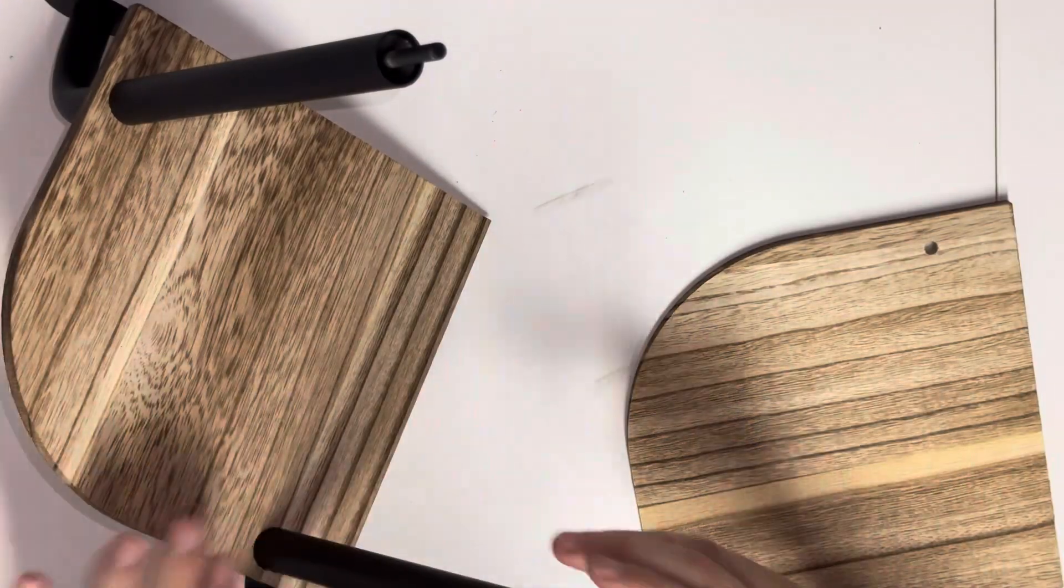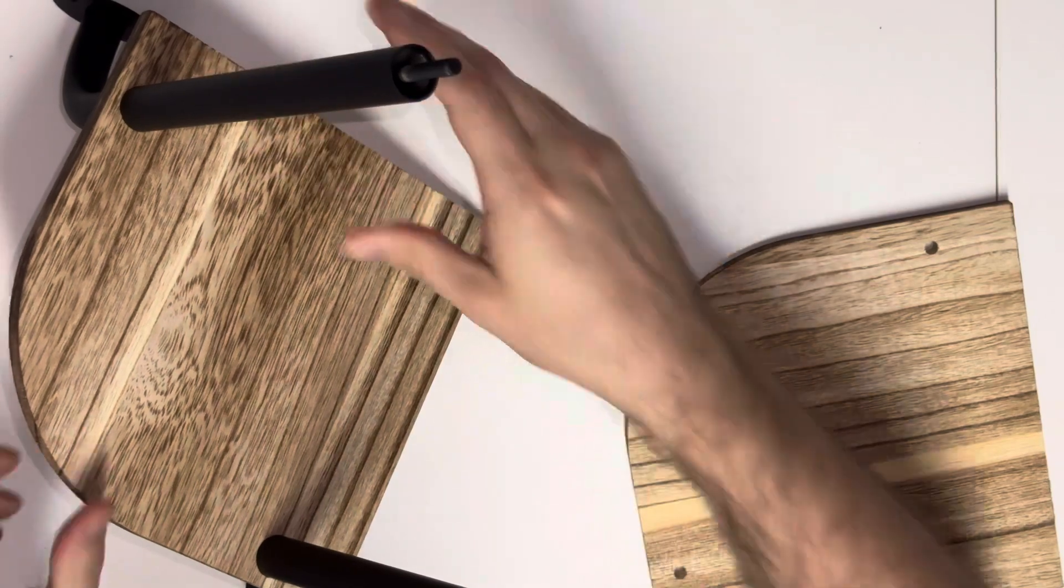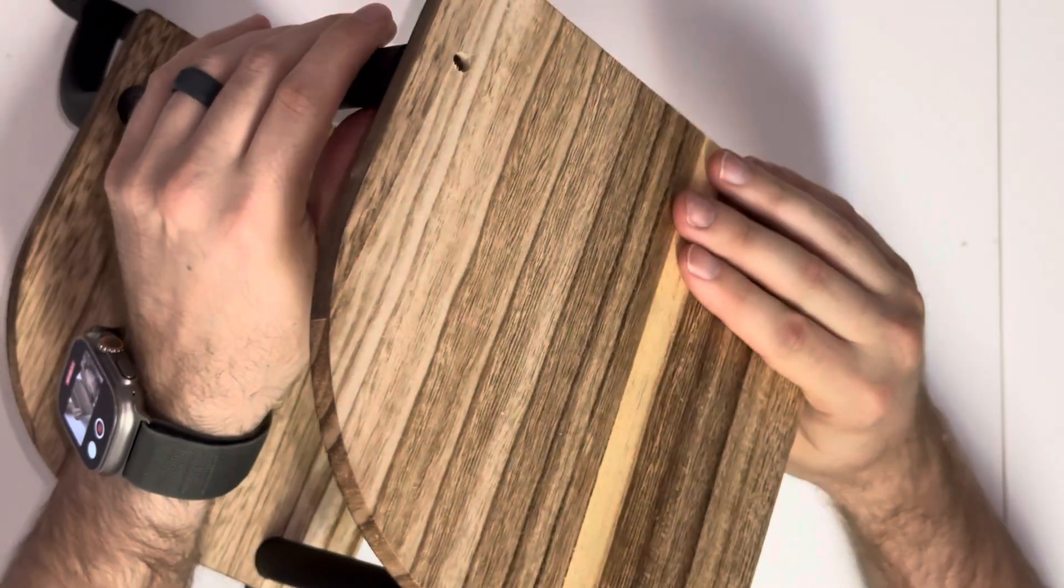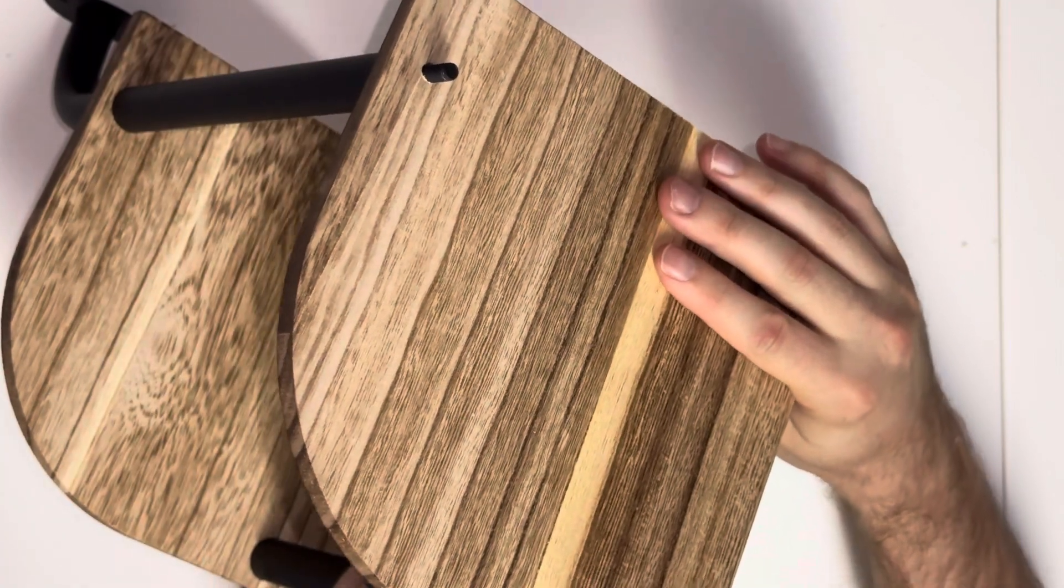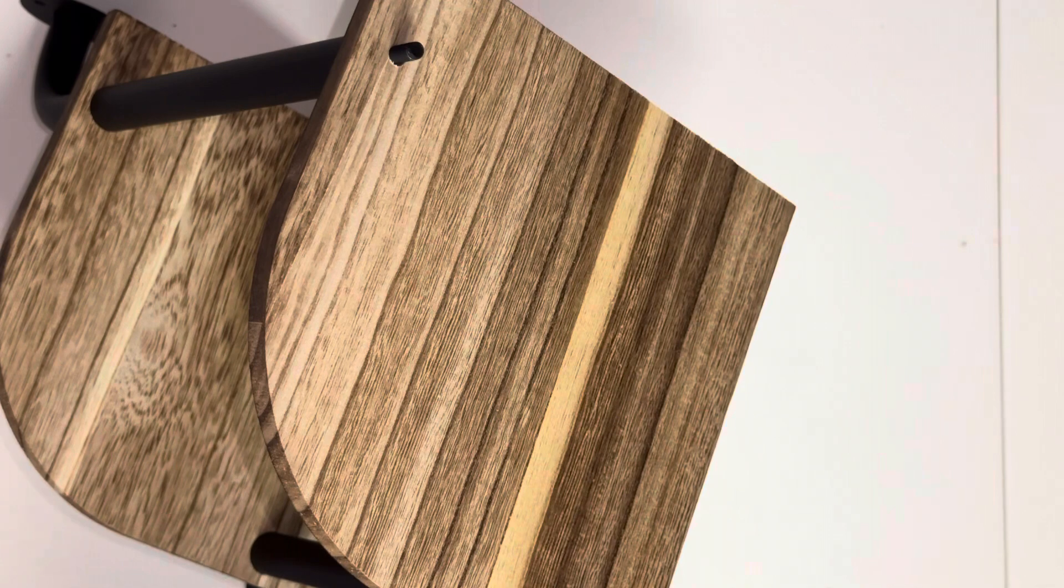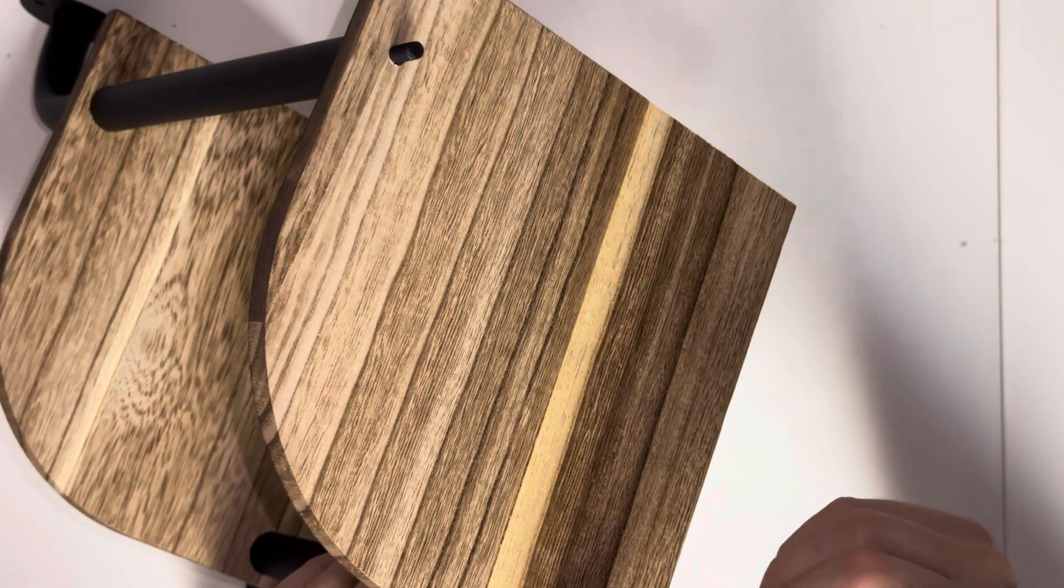Once you get the two pipes threaded together, you want to add on your next shelf. It should just slide on just like that, and then just add the next pipe to it.